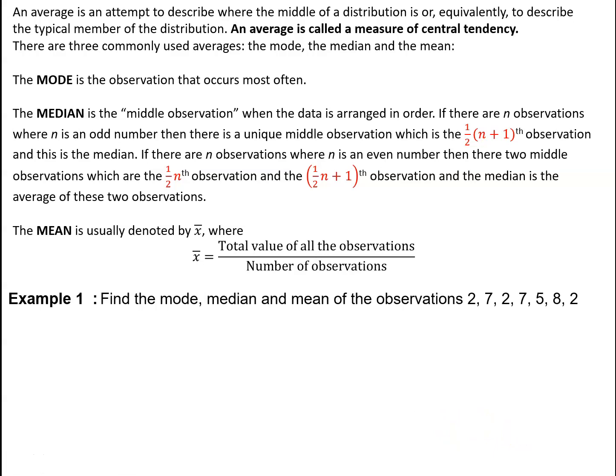So for a simple example, find the mode, median, and mean of the observations 2, 7, 2, 7, 5, 8, 2. We've got seven observations. Listing them in size order: 2, 2, 2, 5, 7, 7, 8. We can see that 2 is the most common observation, so the mode is 2. The middle observation of 7 is the fourth observation, which is 5, so the median is 5. The mean is 2×3 + 5 + 7×2 + 8, which equals 33, divided by 7, giving us a mean of 4.71.